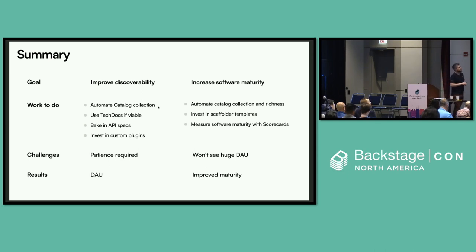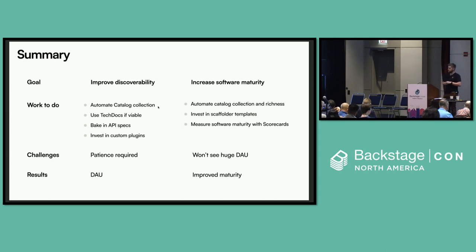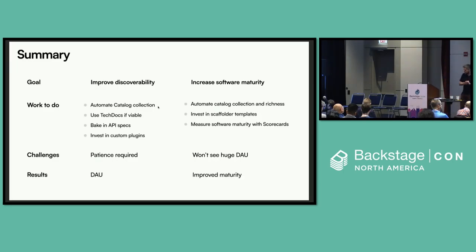The second path is to increase software maturity — equally valuable, just slightly different. You start with automating catalog collection, then invest in scaffolder templates to give people tools for creating new software with the organization's best practices baked in. Then you likely need to build your own tools or purchase something like Rodee's Tech Insights or Spotify's Soundcheck to measure software maturity with scorecards across the catalog. This path won't see high daily active usage, but improving the maturity, compliance, security, and reliability of your software is highly valuable.